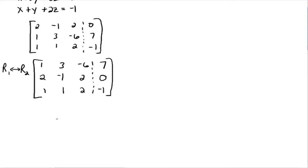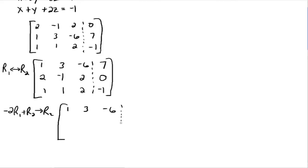Now, you have your one where you want it, so get everything else in that column to be zero. We want this two in row two to be zero, so we multiply row one by negative two. Negative two times row one plus row two gives us a new row two. Negative two times one is negative two plus two equals zero. Negative two times three is negative six plus negative one equals negative seven. Negative two times negative six is 12 plus two is 14. Negative two times seven is negative 14 plus zero is negative 14.